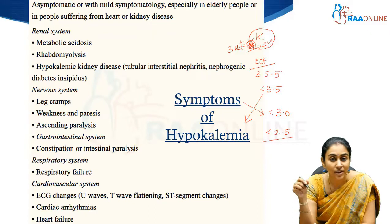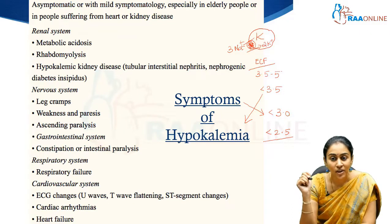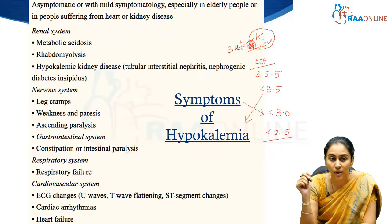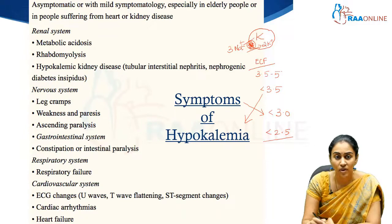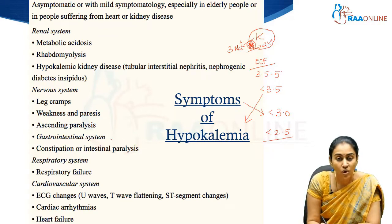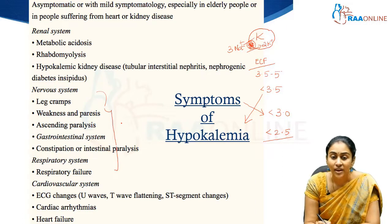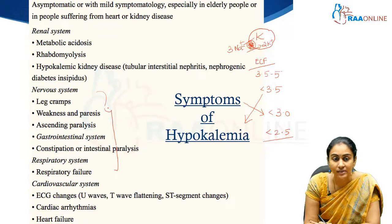When the potassium level drops below 2.5, the patient may develop fatal arrhythmias if left unchecked. Most often, patients with hypokalemia are asymptomatic until it drops to very low levels. More common symptoms include gastrointestinal and neurological symptoms like constipation and paralytic ileus.